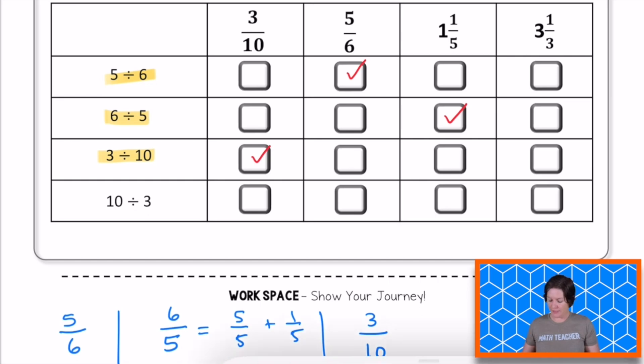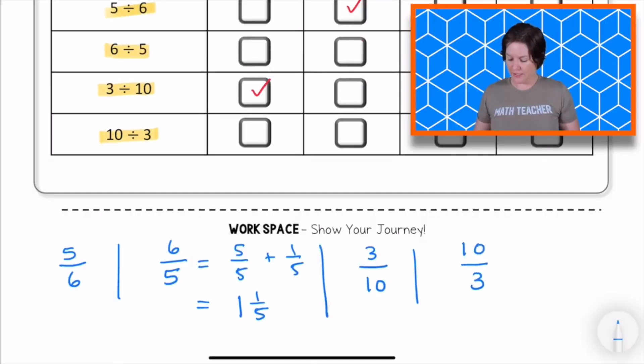And then we have our final division expression, 10 divided by 3. Let's write that as a fraction, 10 divided by 3. Awesome. Now, do you see 10 thirds up there? I don't either, but I see 3 and 1 third, which I believe is equivalent, but I'm going to make sure that it is first.